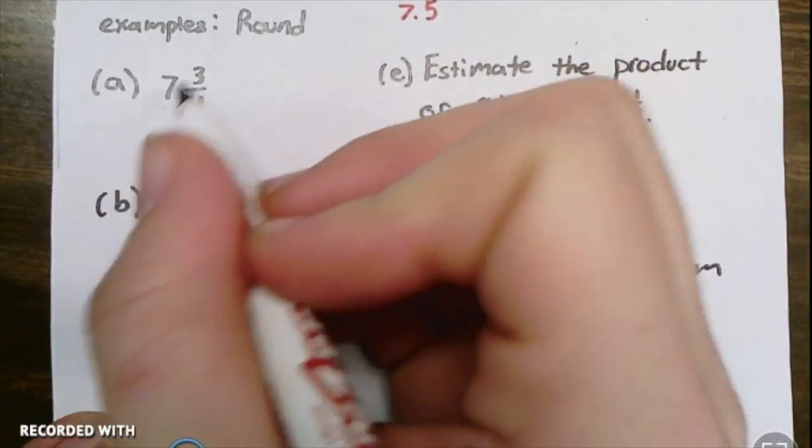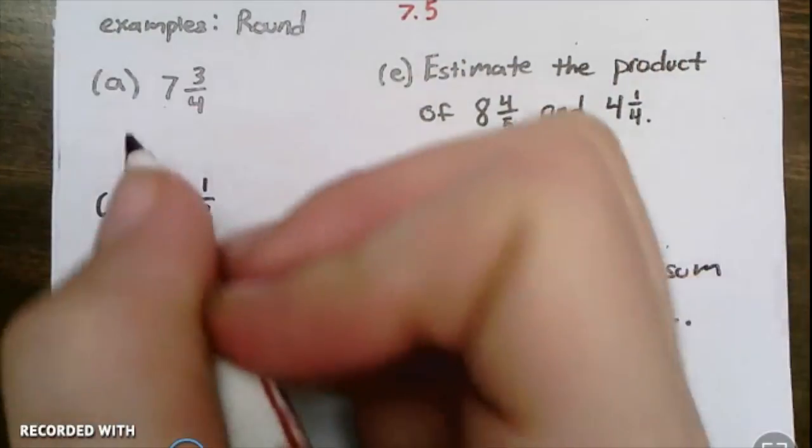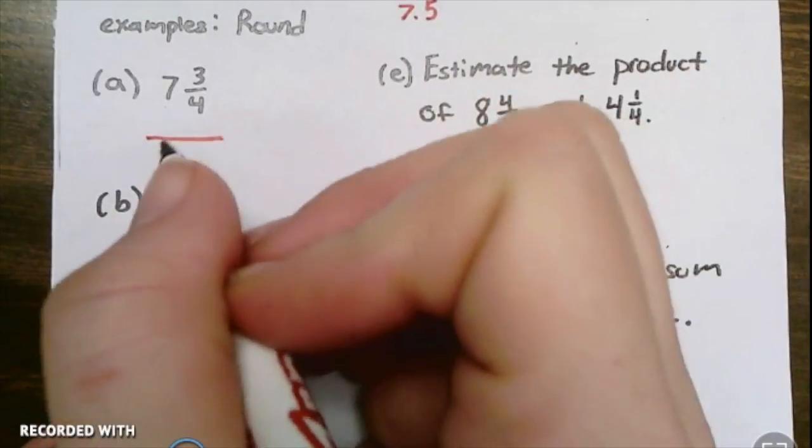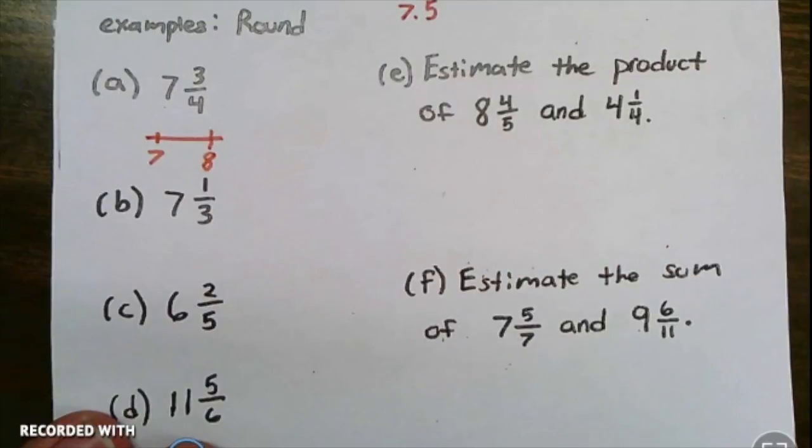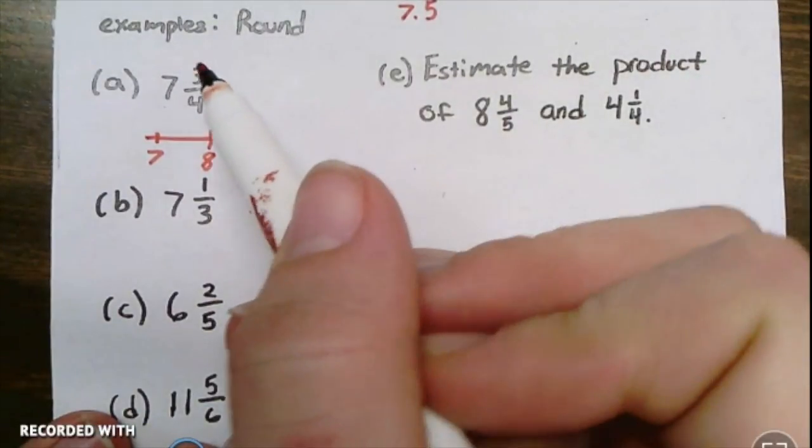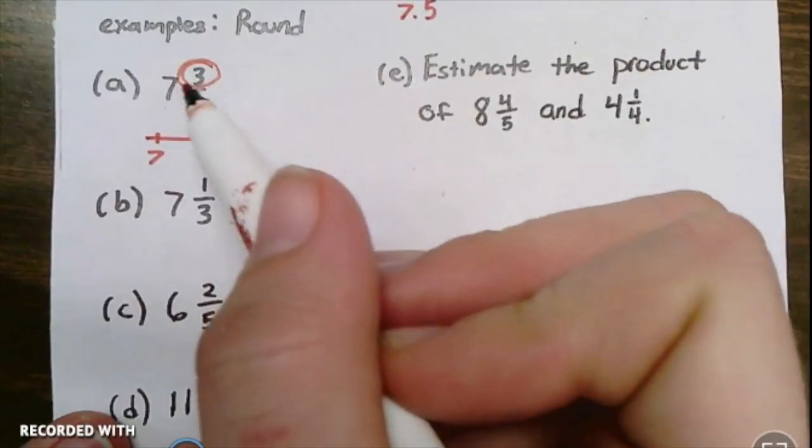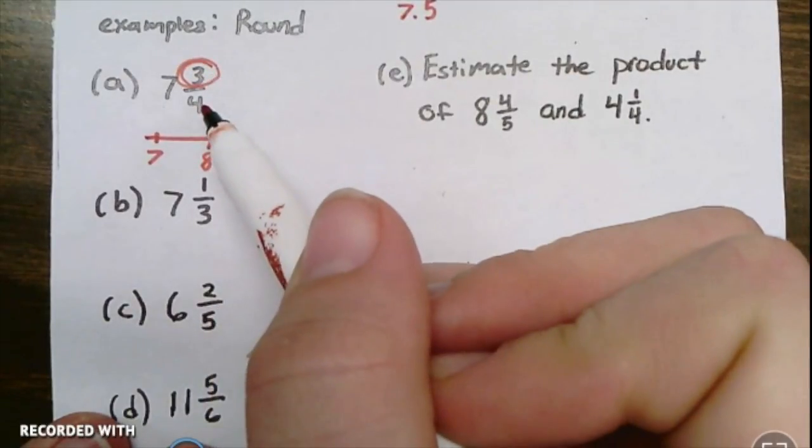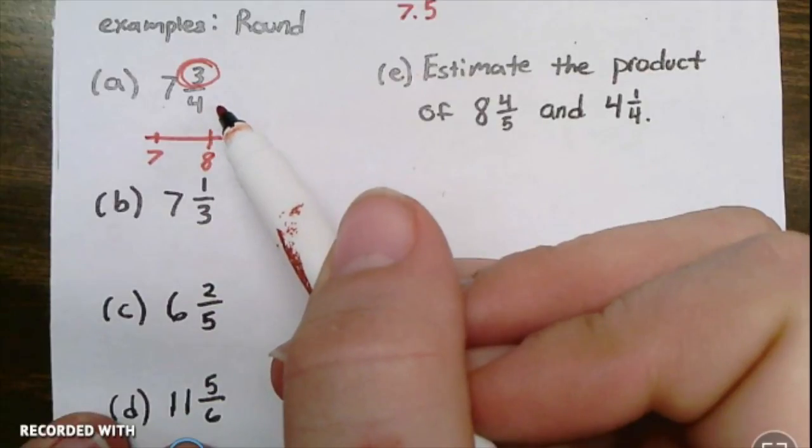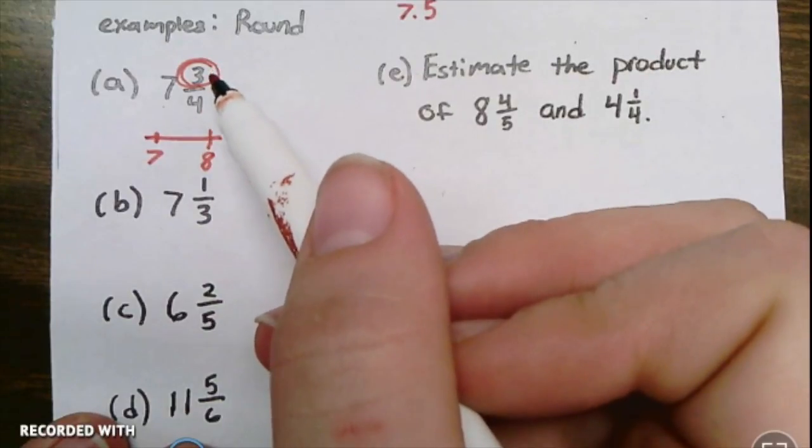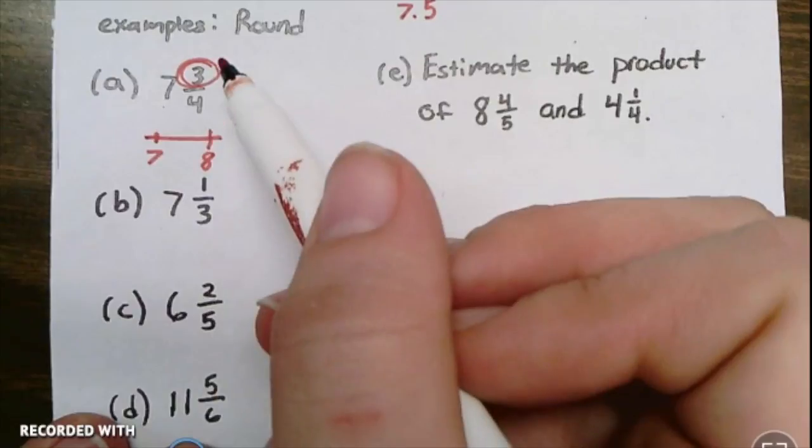Here I've got seven and three-fourths. My question I'm really figuring out is, is this closer to seven or is it closer to eight? I'm going to look at my numerator. Is my numerator half or more than half of four? Well, what is half of four? Two. And three is more than two, so this is going to round up to eight.